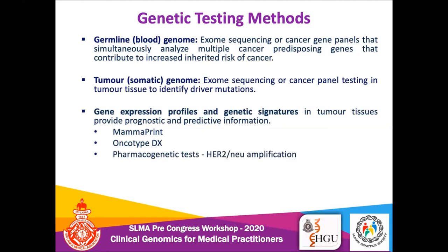Pharmacogenomic tests such as HER2 amplification testing are also helpful, because one-third of breast cancers have HER2 amplification, and drugs like Herceptin have been developed to block this receptor. All these tests are now very helpful in the management of patients with breast cancer.